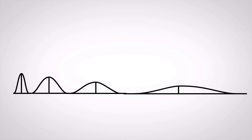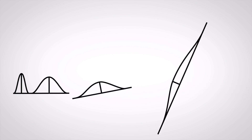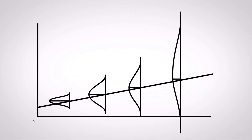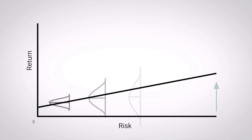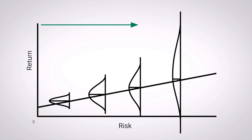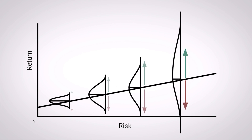I took some little bell-shaped probability distributions and turned them on their side, and I superimposed them on the same line — it's the same underlying line, just now with some embellishment. With the old graph, as you move from left to right, the risk increased and the return increased. But with this new graph, as you move from left to right, the expected return increases just as it did in the old one. But at the same time, the range of possibilities becomes wider, and the worst outcomes become worse. That's risk. This is the way to think about the risk-return relationship.